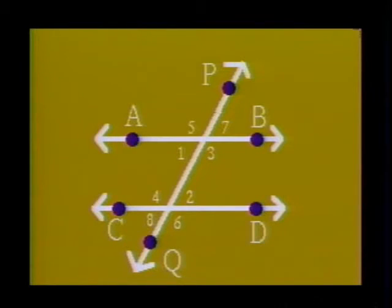If two lines are intersected by a third line called a transversal, then eight angles are formed. In our drawing, line PQ is a transversal to lines AB and CD.